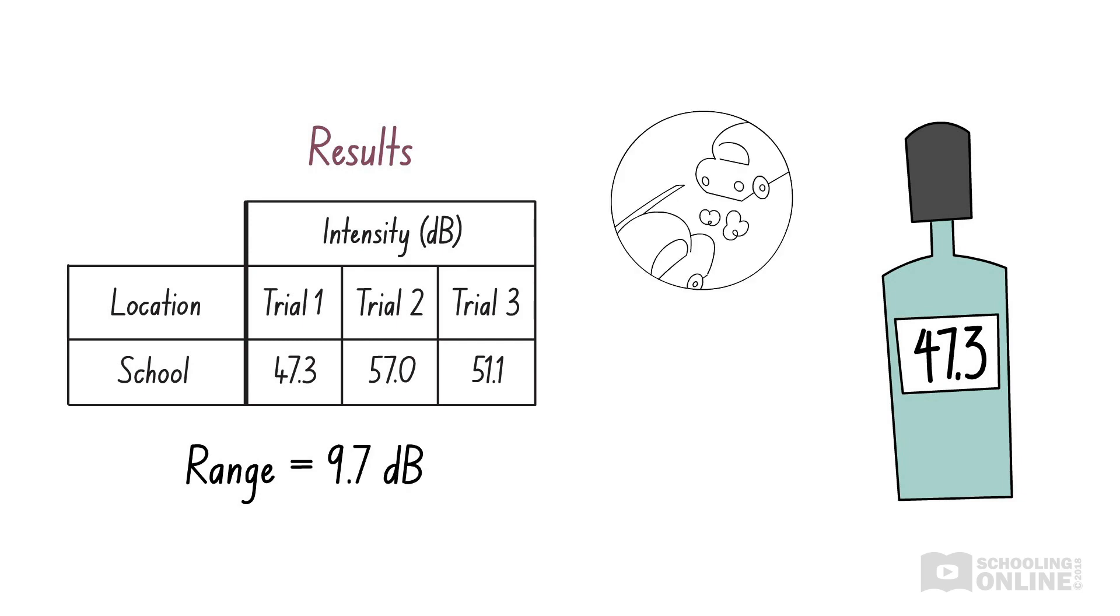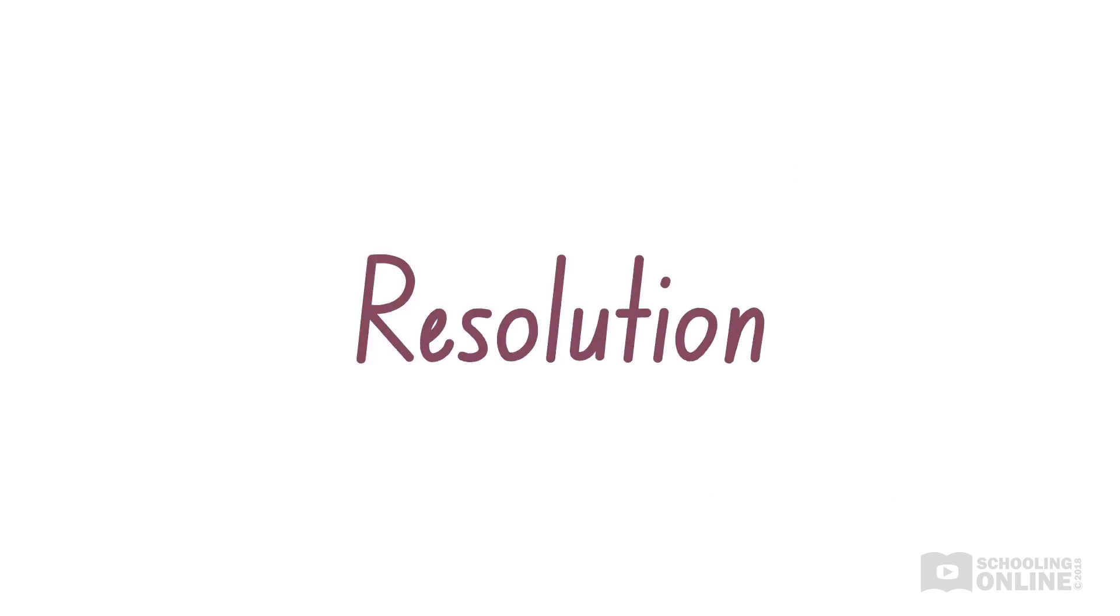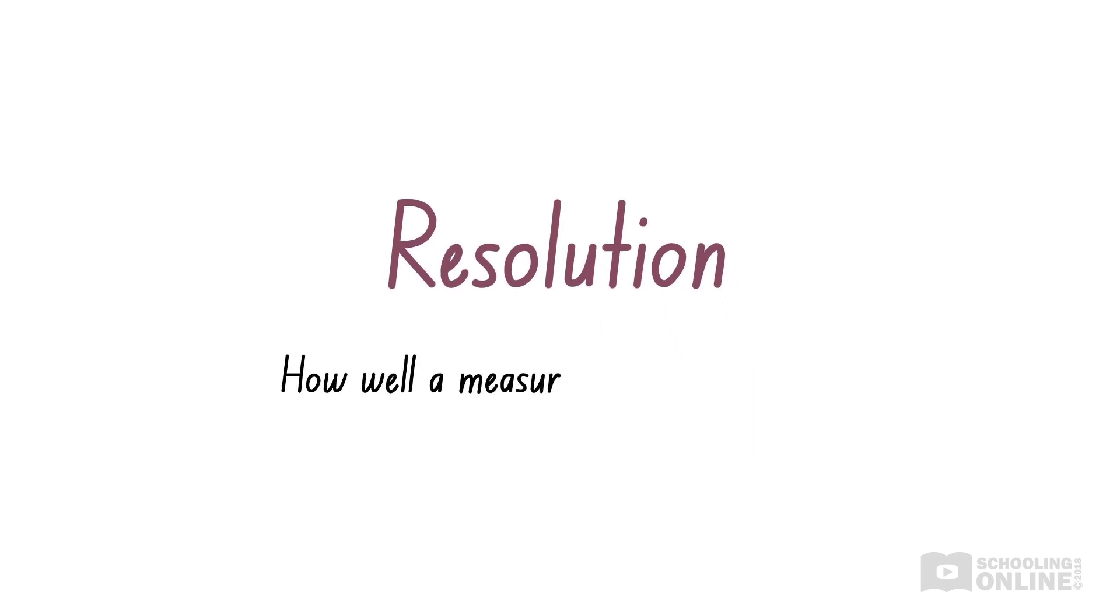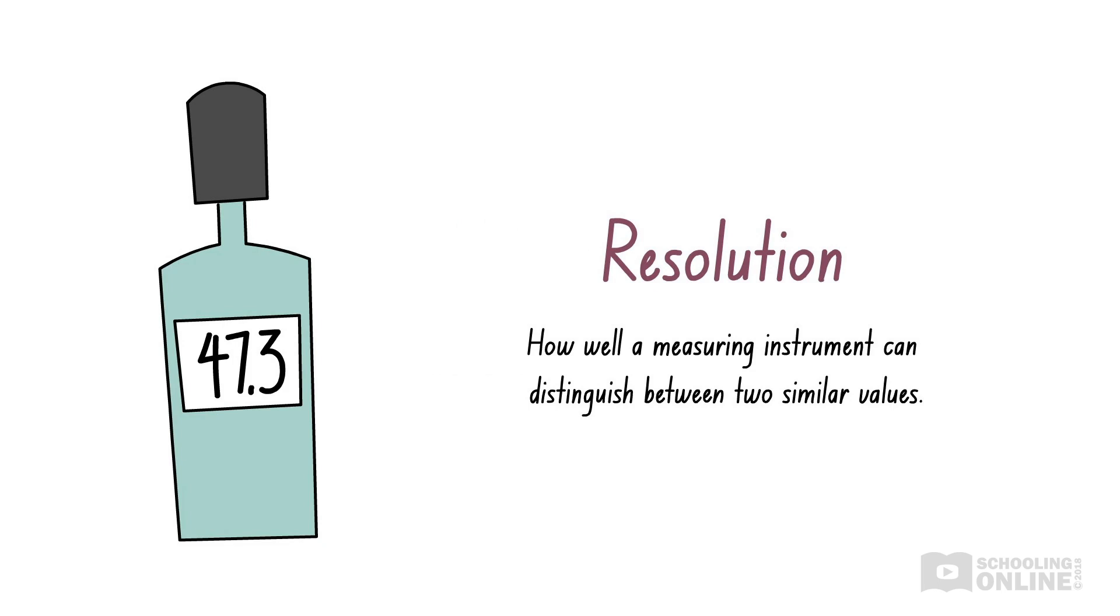As we can see, the measurements taken at school vary by almost 10 decibels. So how can we tell if random errors actually affected our results? Well, we can compare the variation in our results to the resolution of our decibel meter. Remember, the resolution of an instrument refers to how well the instrument can distinguish between two similar values. In this case, the decibel meter measures sound intensity in increments of 0.1 decibels, so it is fairly accurate and has a moderate resolution.